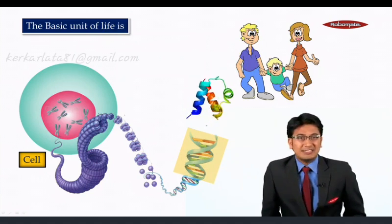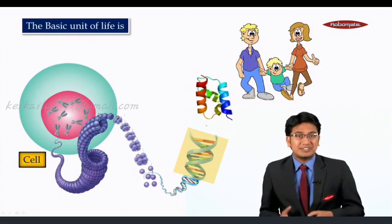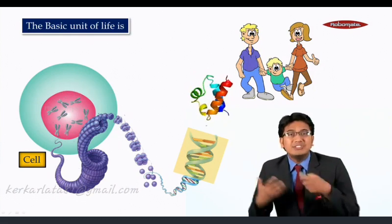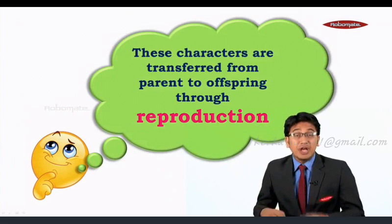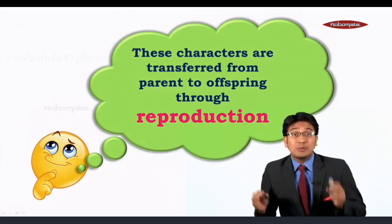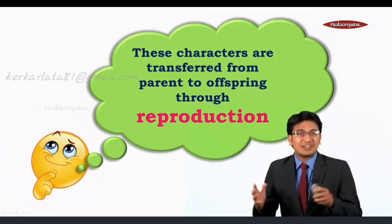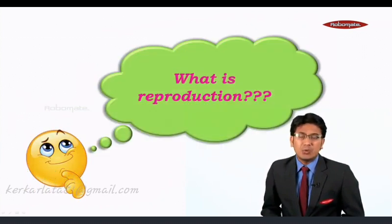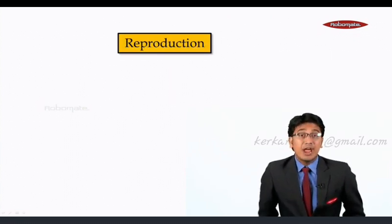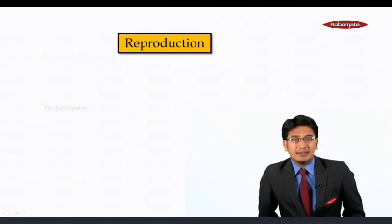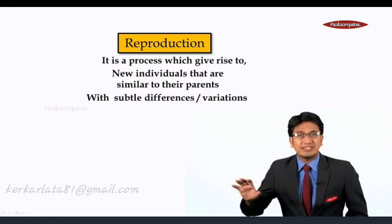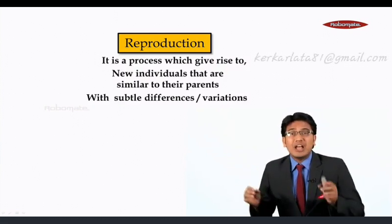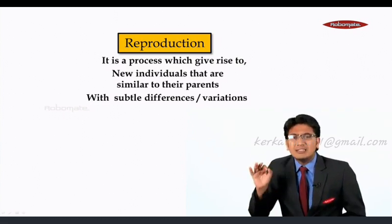Now let's understand how these characters — these proteins, DNA, and genes — can transfer from one body to another. These characters are transferred from parent to offspring through a process called reproduction. Reproduction is a process which gives rise to new individuals that are similar to their parents but with subtle differences.